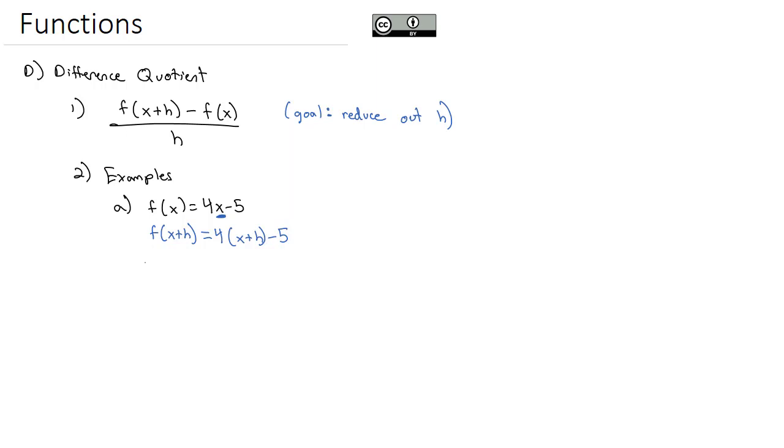Putting that into our definition for the difference quotient, we take the f of x plus h, which is the 4 times x plus h minus 5, and then we subtract the entire function. An important step here to not miss is that subtraction has to go into parentheses as we put it all over h.